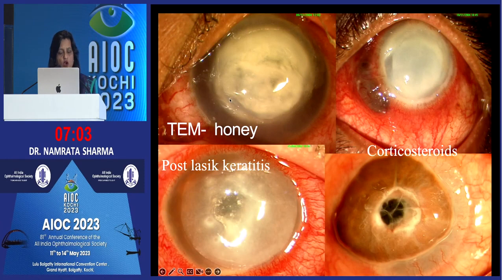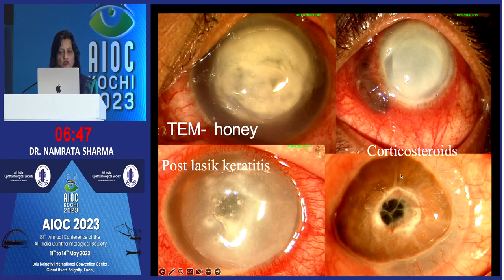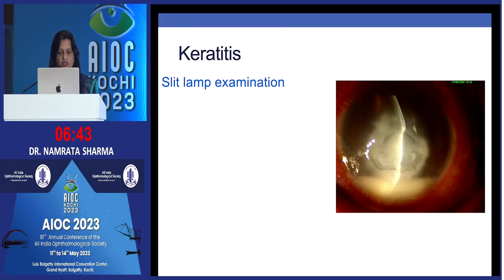These images show how traditional eye medicine such as honey can cause microbial keratitis. This is a keratitis after surgery — post-LASIK keratitis — and notice that in these two cases there is excessive thinning and perforation, occurring mainly because concomitant topical steroids were used with antibiotics.